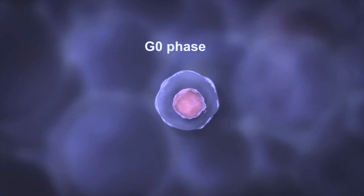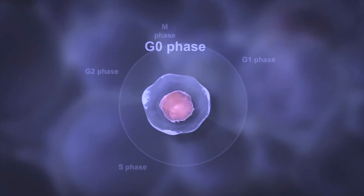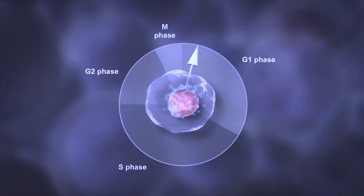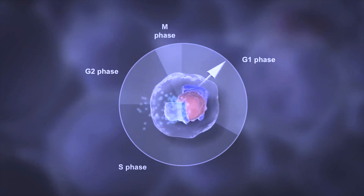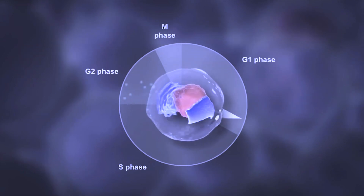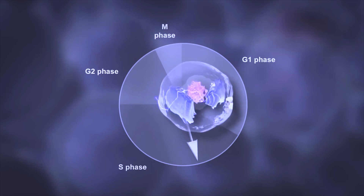After mitosis is complete, the cell enters the G0 phase, which is where the cell remains until it wants to divide again. After the G0 phase, the cell enters the G1, S, and G2 phases.